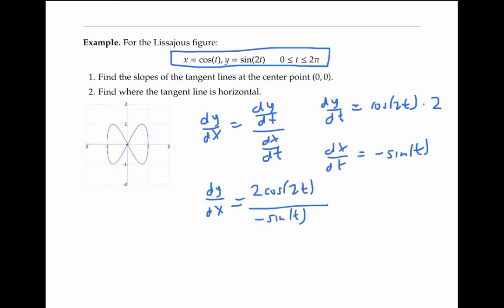Now we want to calculate this slope not when t is zero, but when x and y are zero. x is zero when cos(t) is zero, which is when t is π/2 and 3π/2. Those are the only t values that work in the interval of t values that we're interested in.